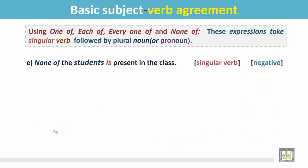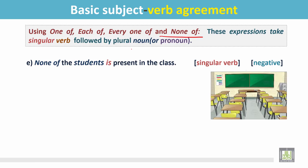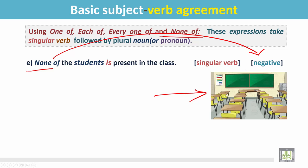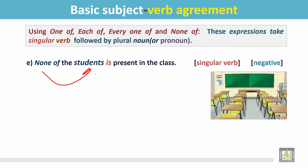See another example of none of. None of the students is present in the class. This class has no students. The sentence begins with none. It gives negative meaning. None is followed by a plural noun, students, but this plural noun is followed by a singular verb, is.